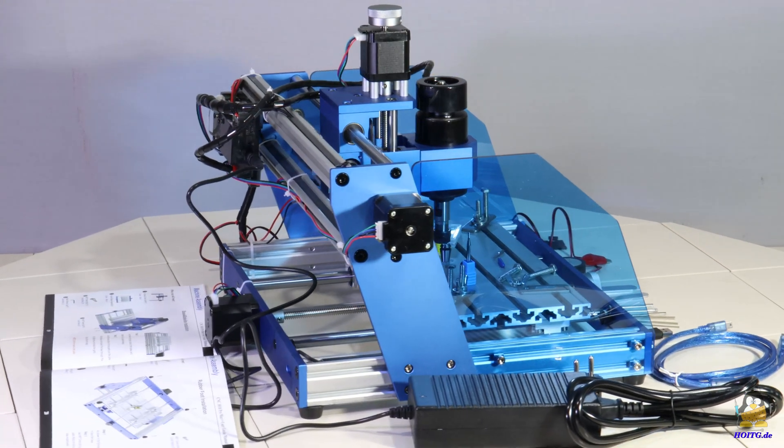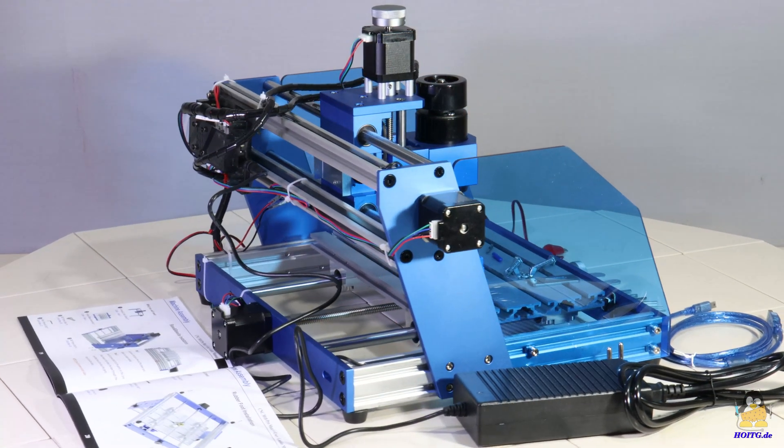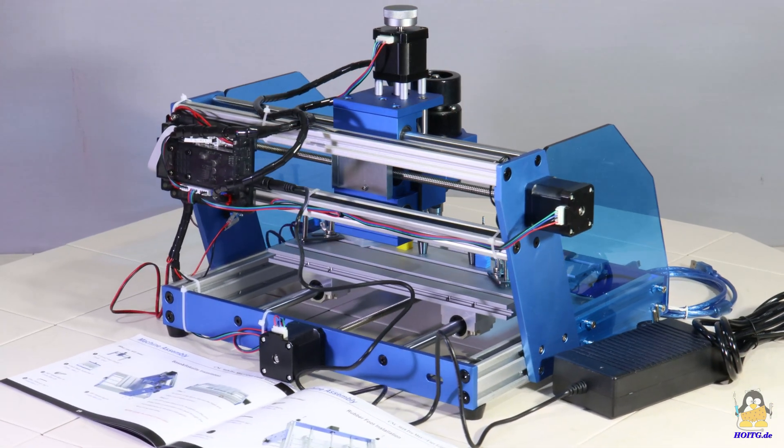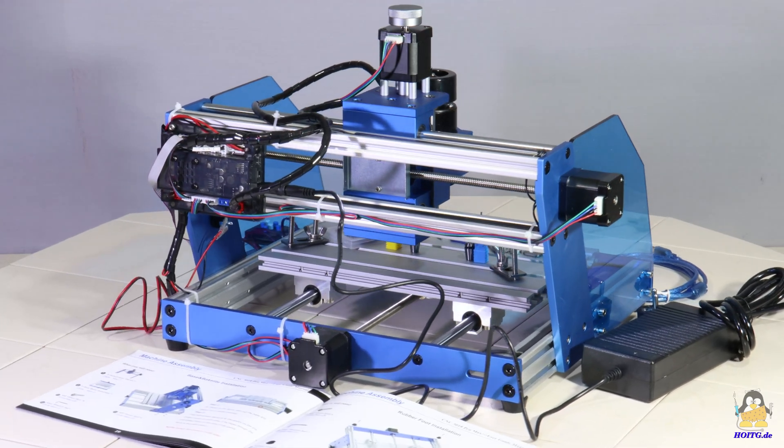I received the CNC machine type 3018 Pro Max shown here from the company Mostix. The machine is almost completely made of metal, the frame and the milling table are made of aluminum.